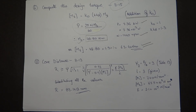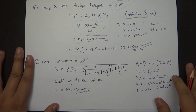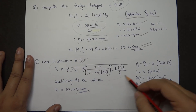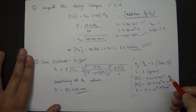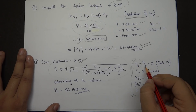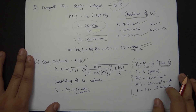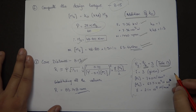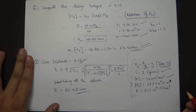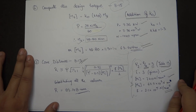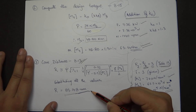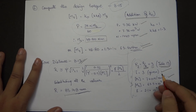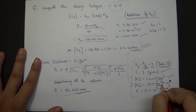The seventh step is calculation of cone distance R from page 8.13. The formula requires five values: psi_Y = R/B = 3 (from Table 13), I = 3 (given), Sigma_C = 740 N/mm², design torque = 63.44 N·m, and E = 2.1 × 10⁵ N/mm². Substituting all values — remembering to convert torque to Newton·millimeter — gives cone distance R = 83.148 mm.